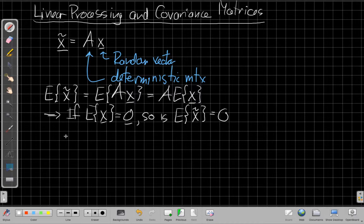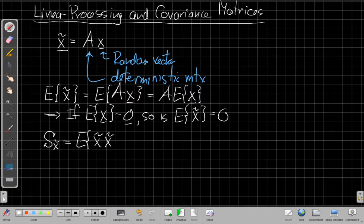The second thing we want to know is what's the new covariance matrix. I say if I apply this transformation, what's capital S of X tilde? Well, again, just starting from the definition, I get it's E[X tilde times X tilde Hermitian].